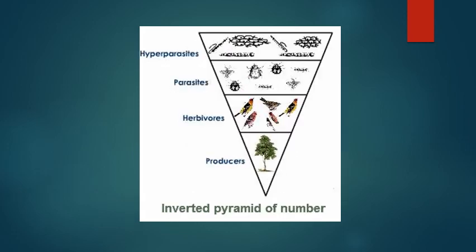Third is the inverted pyramid of number. Its shape is just opposite of the upright pyramid. Very few examples of this inverted pyramid are found; it is generally found in parasitic food chains, where one primary producer supports a number of herbivores, which in turn support numerous parasites, which further support more hyperparasites. For example, a single tree — an autotroph — is habitat for a large number of birds, which are primary consumers.